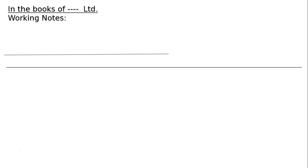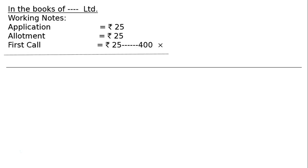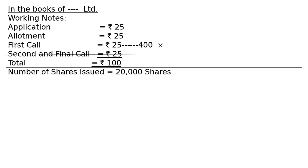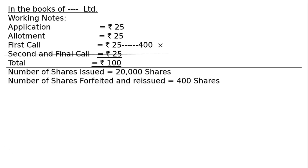I have not prepared the share capital account, but you can do a ledger posting. Working notes: Application Rs.25, allotment Rs.25, first call Rs.25. We could not receive first call on 400 shares. Second and final call of Rs.25 has not been made. Total is Rs.100. Number of shares issued: 20,000. Number of shares forfeited and reissued: 400. There is no partial reissue.